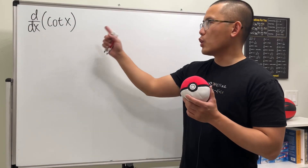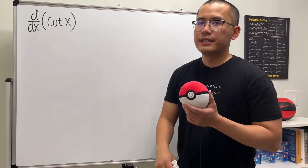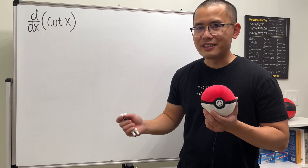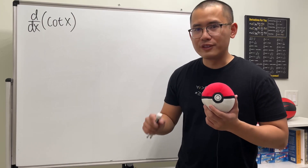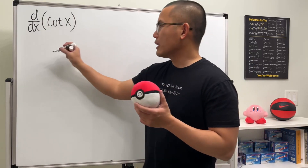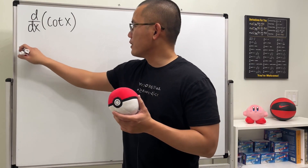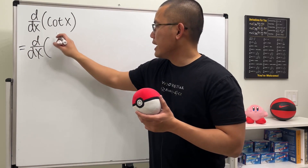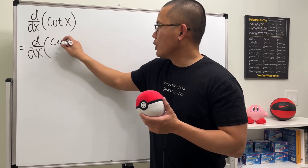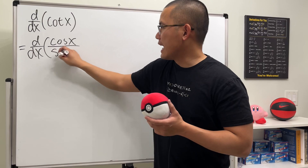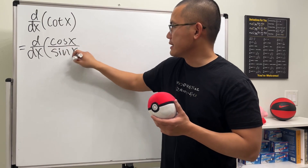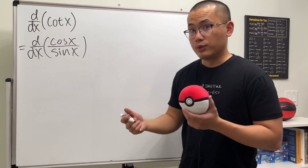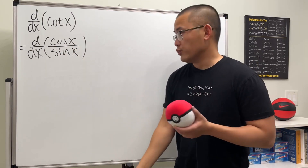Let's do the derivative for cotangent x. Cotangent x is the same as cosine x over sine x. So let's go ahead and write that down right here — this is cosine x over sine x. And because once we have this, we can just go ahead and use the quotient rule.